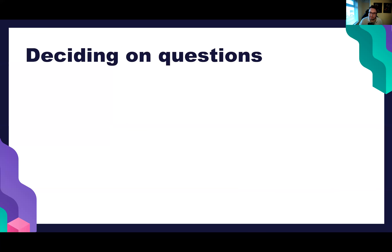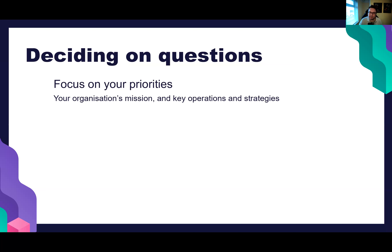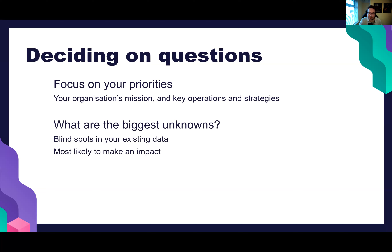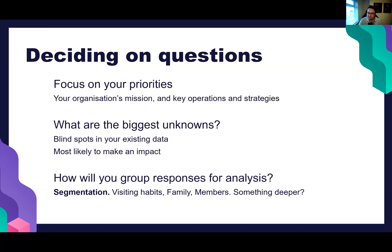So how do we decide what we should ask about? It all links back to the core mission and strategy of your organisation. You've laid certain things out as goals and impacts you want to achieve, so your audience research should speak to those goals directly and tell you if you're delivering them, and if not, how to do better. You should try to identify what your biggest unknowns are — you're looking for blind spots in your existing data and audience understanding. Ideally you're not asking something you could already find out another way through your ticketing information or website analytics. You're looking for the questions most likely to make an impact and be really useful for strategy or day-to-day work.